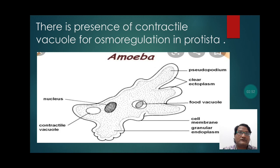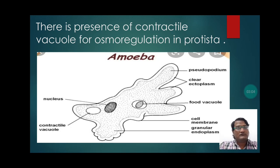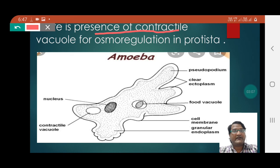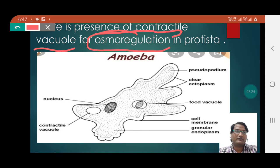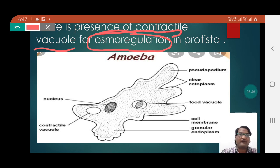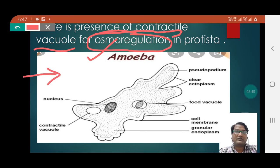There is presence of a contractile vacuole for osmoregulation in Protista. The main work of the contractile vacuole is osmoregulation — that is, it maintains the entry and exit of water. Let us understand the concept of osmoregulation with the help of this picture which has been displayed here.